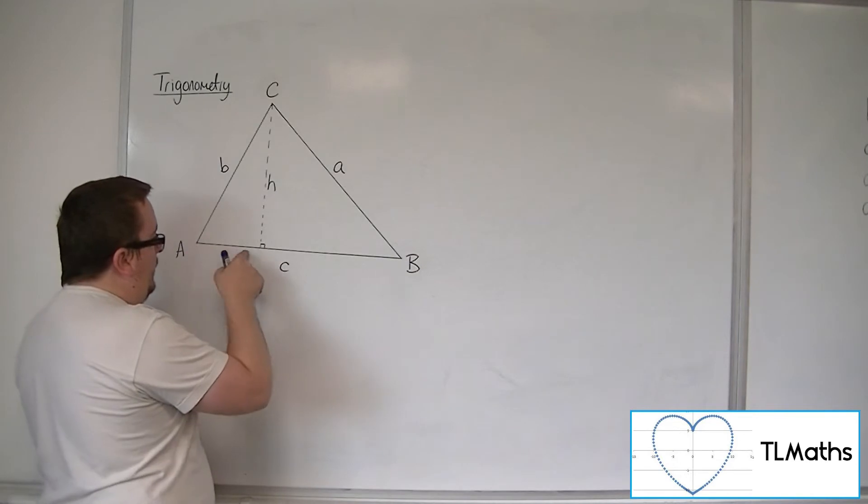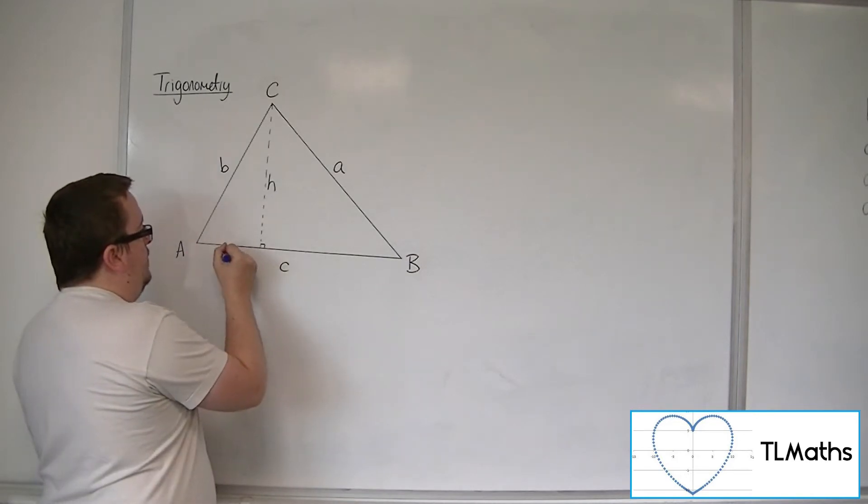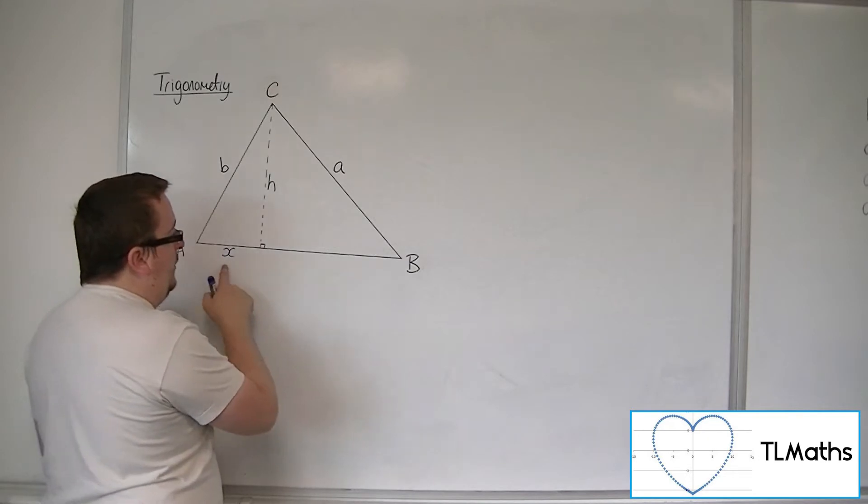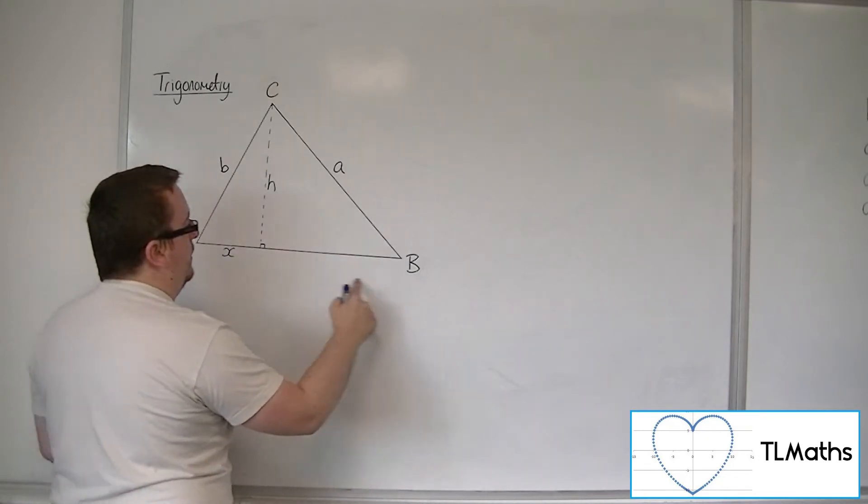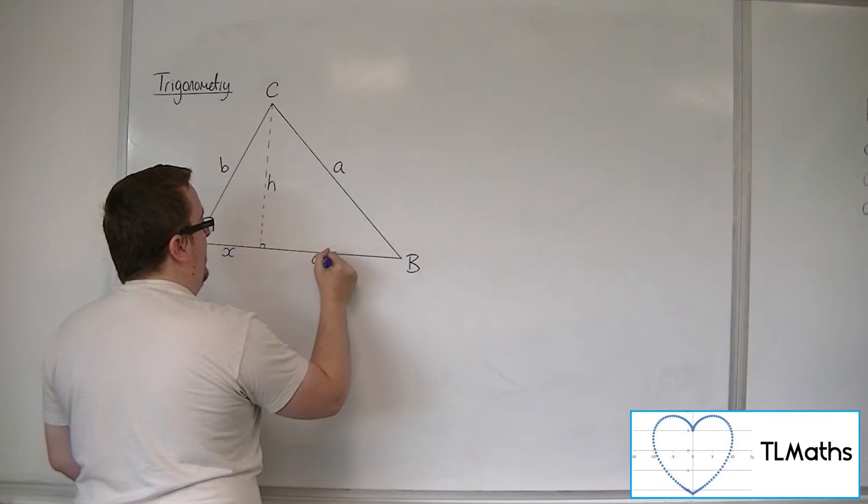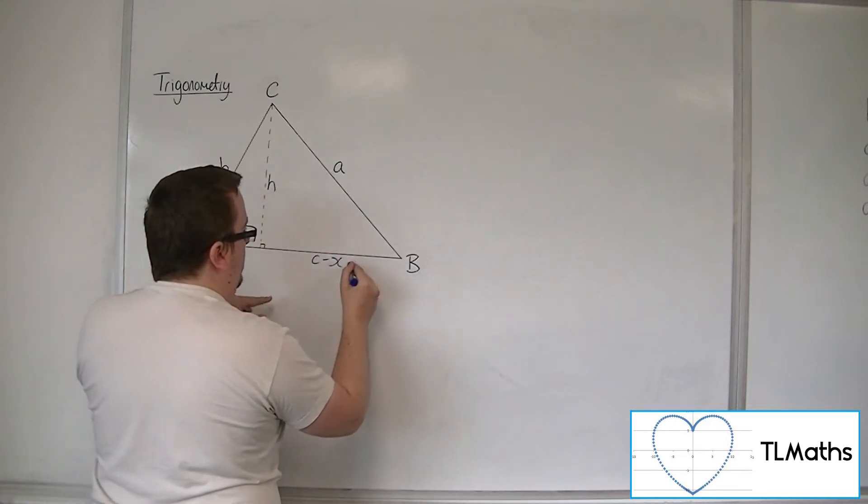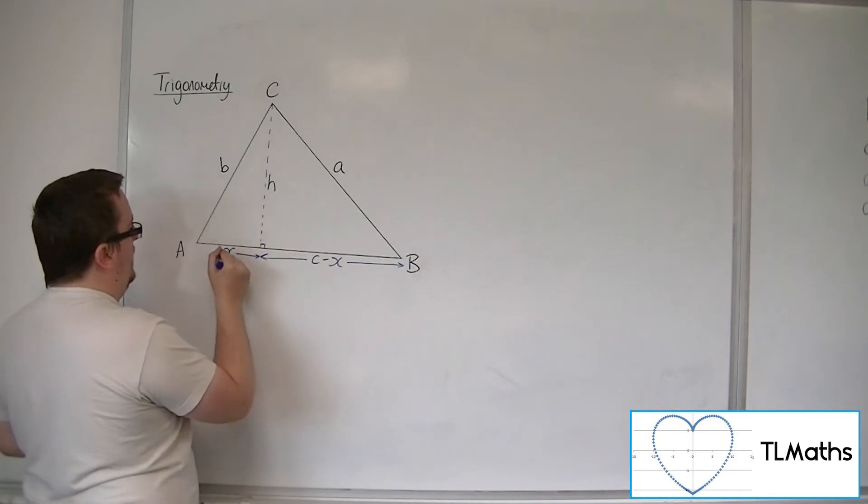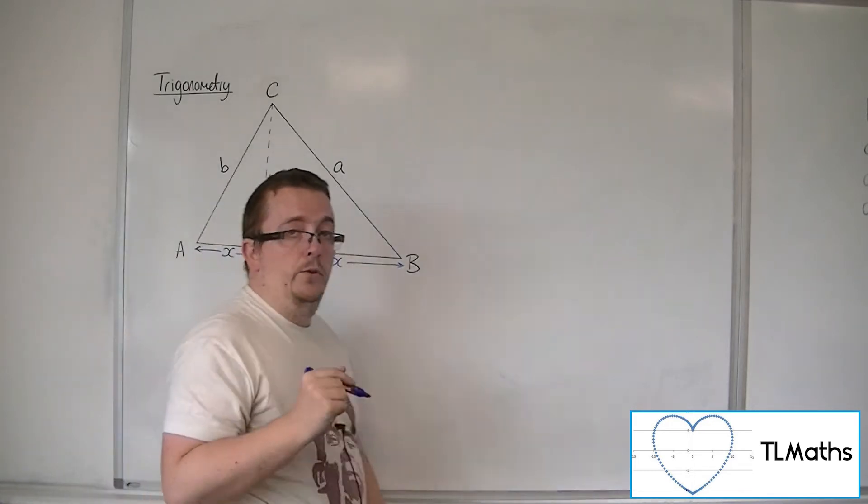If we let this length here be X, then if C is this overall length, then this will be C minus X, that length there. So that will be C minus X, that will be X.